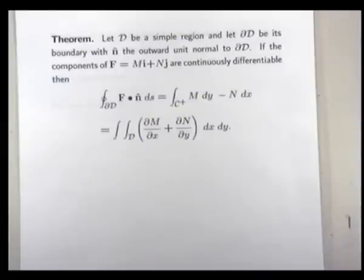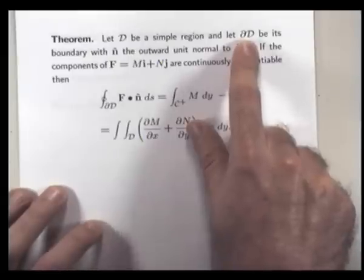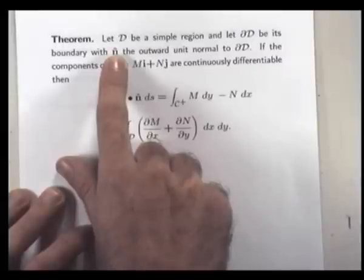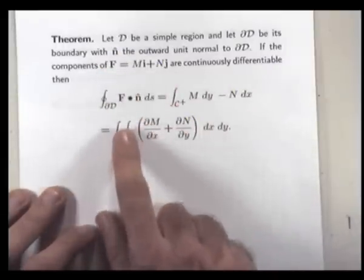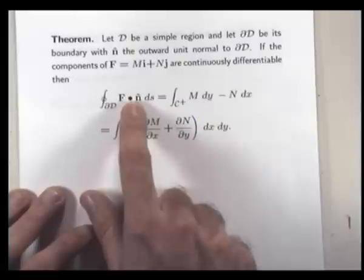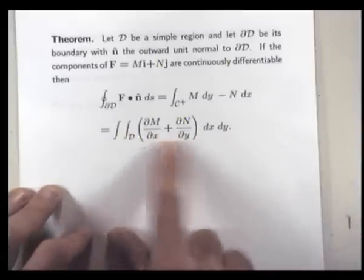All right, there's another form of Green's theorem, and this is known as, actually, Gauss's divergence theorem in the plane. Okay, let's have a look at this. Suppose, again, curly D is a simple region, and this time I'm going to denote the boundary by partial D, curly DD. Now, suppose we have a unit outward pointing normal denoted by this N hat. If F is smooth enough, then this path integral here, which we can also write as this line integral, is equal to the double integral of this function here, over D.